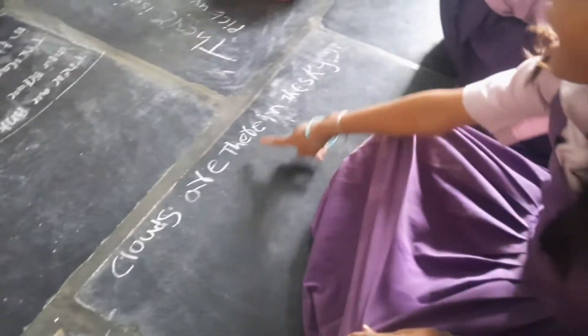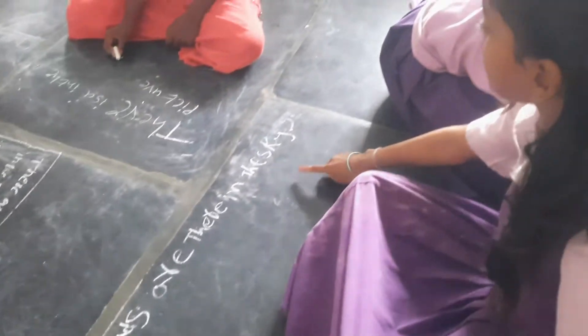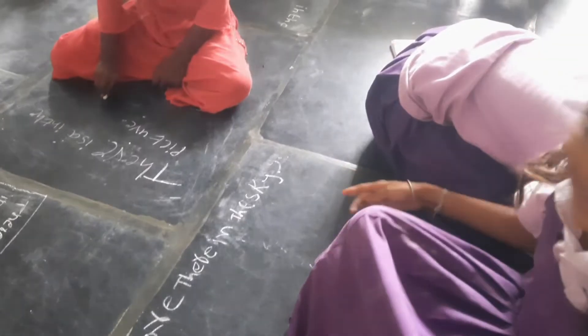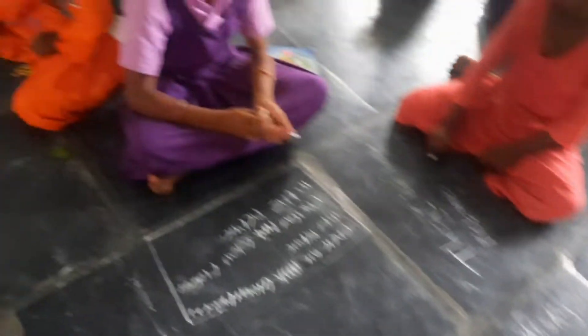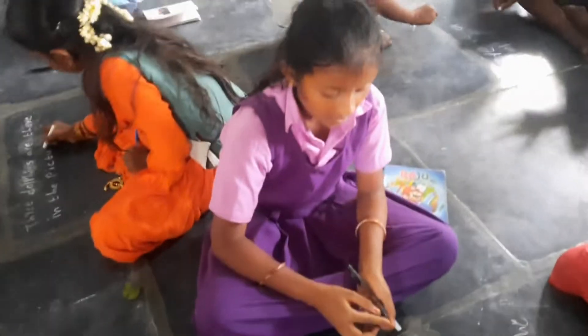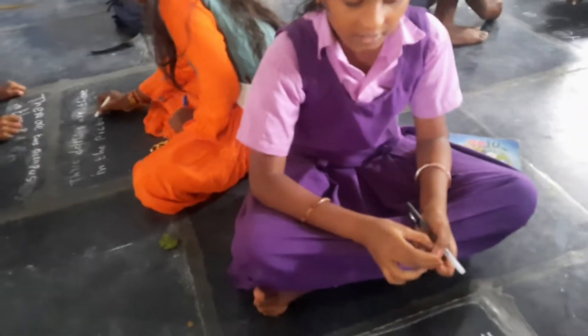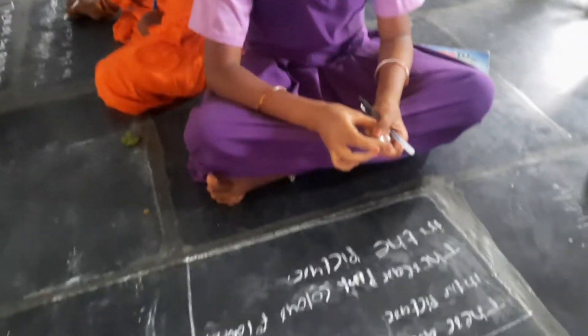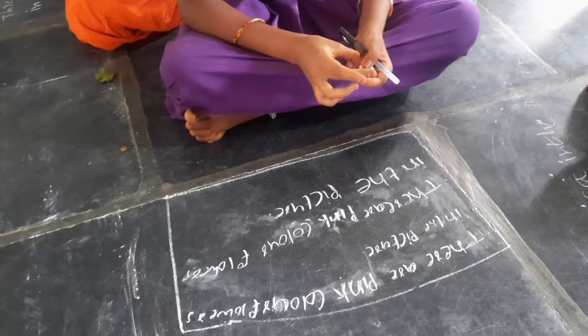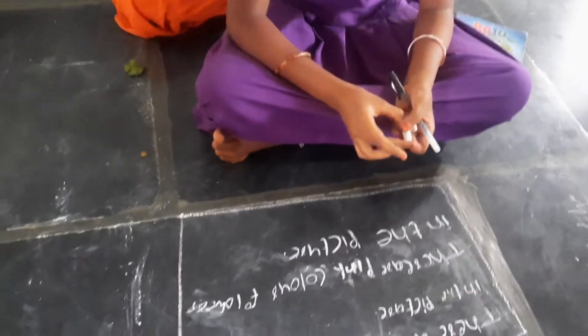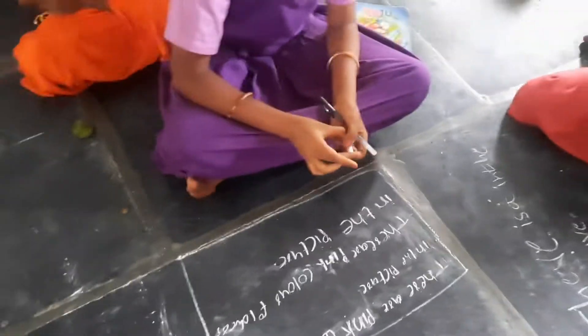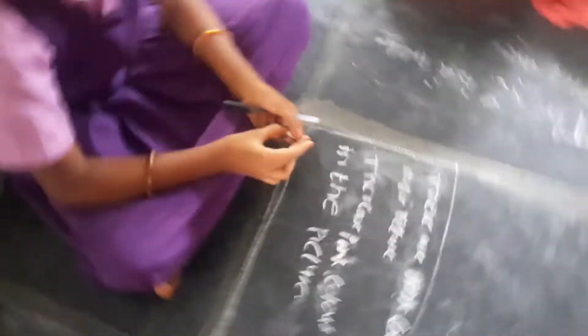Swati, what do you write? Clouds are in the sky. Very good. Next. There are pink colors. Clouds are in the picture. Next. Very good.